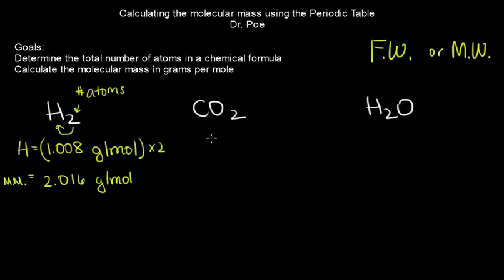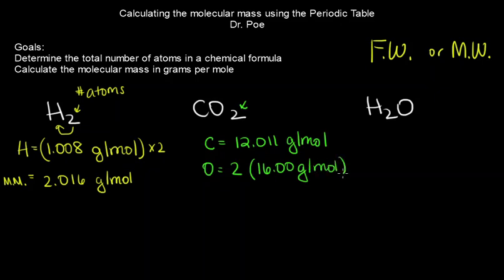Okay, so we've got carbon. We've got one of those. Its molecular mass is 12.011 grams per mole. And we've got oxygen, and there's two of those, only one of these. So 2 times 15.999, I'll always round it to 16.00 grams per mole. Okay, and then you just add them up. So, adding these up.